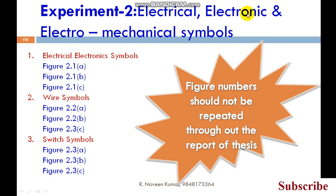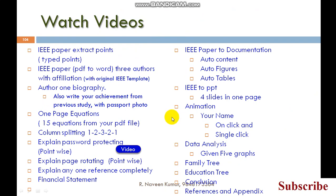For second experiment, electrical, electronic and electromechanical symbols, the first heading is electrical and electronics symbols. The figure caption should be like this: two is the chapter or experiment number, one is the subheading, and ABCD is the figure numbers. For wire symbols, two is common, two is the subheading number, three is the subheading number. The figure numbers should not be repeated throughout the thesis. If you have given 2.1, it should not be repeated anywhere. 2.1a, 2.1b, 2.1c, this is different: 2.2a, b, c, like this.